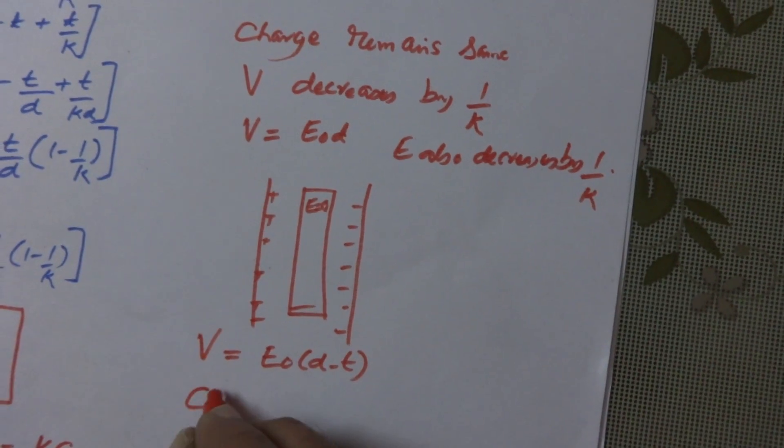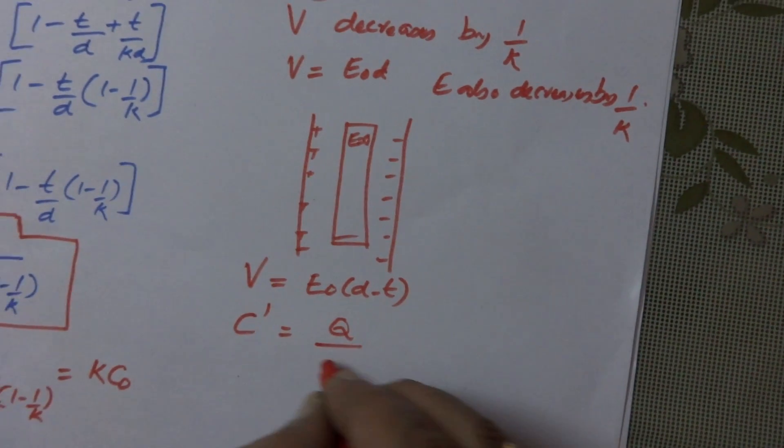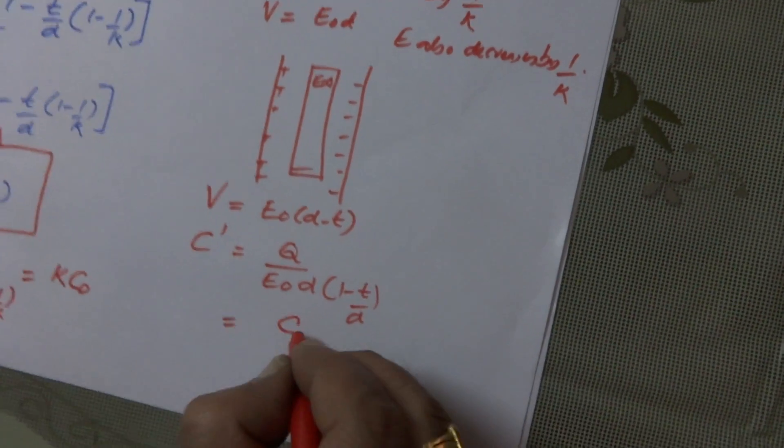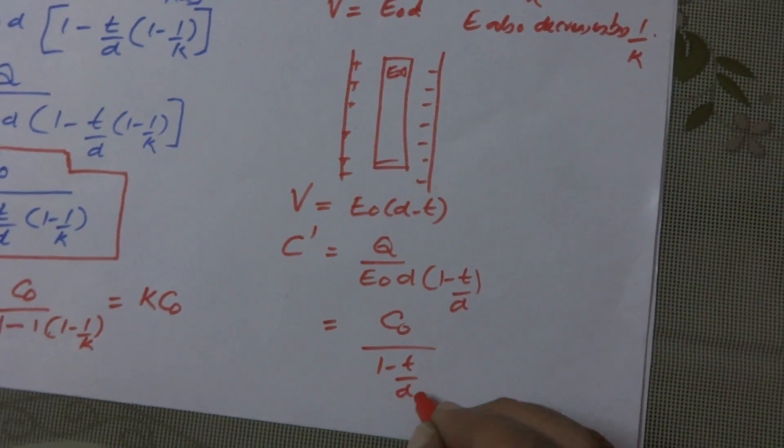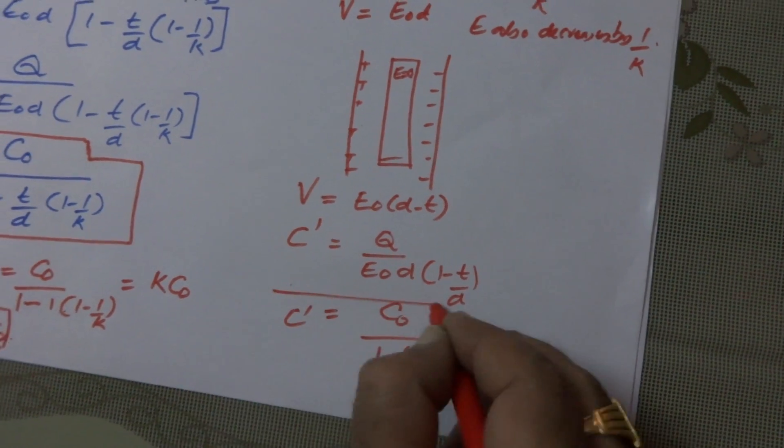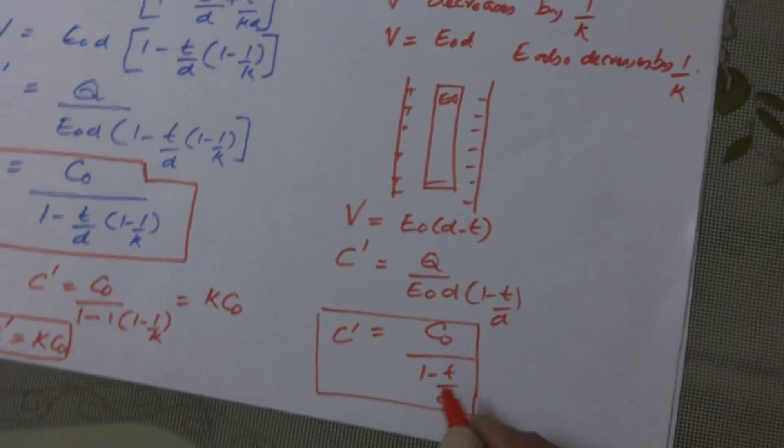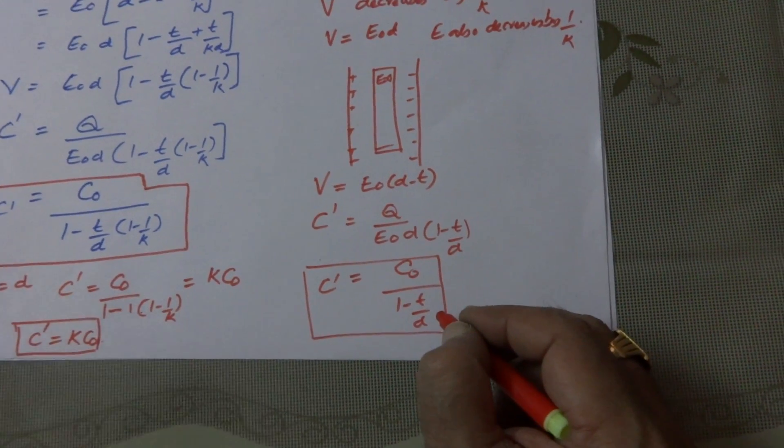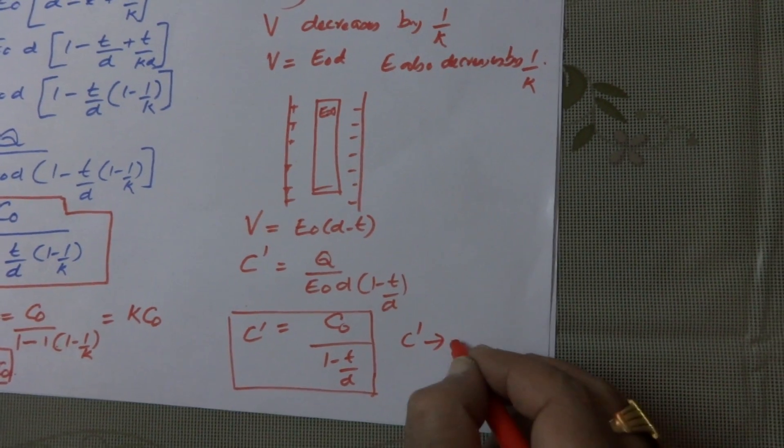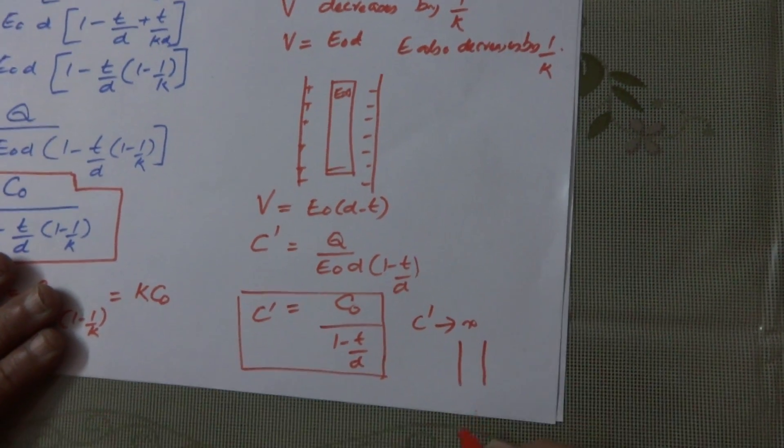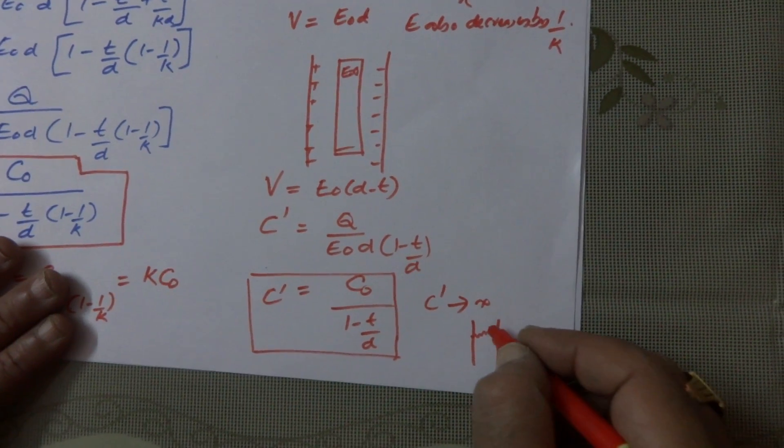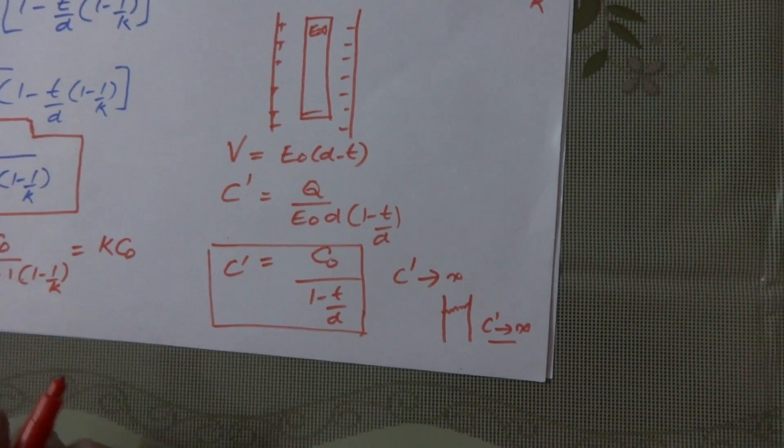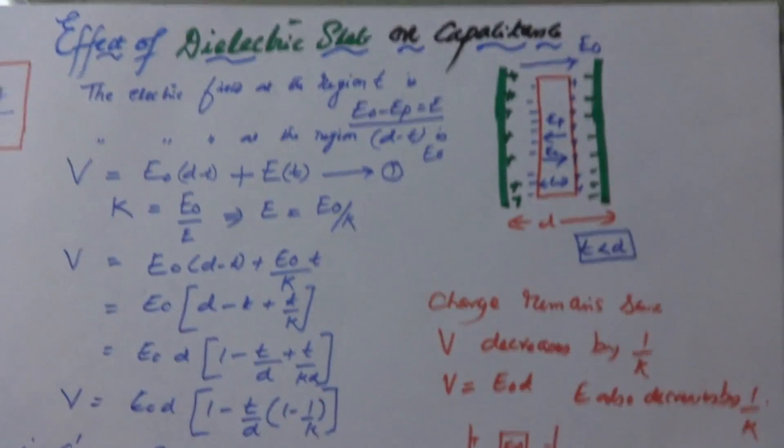This C dash is equal to q by E0 into d into 1 minus t by d. That means, it is C0 by 1 minus t by d. So this is the new capacitance when the metal slab of thickness t is introduced. Suppose, if this thickness is equal to the total thickness, the distance between the two plates, then what happens? C dash tends to infinity. That is, if you take any capacitor and even if it is joined with a wire, conducting wire, then its capacitance tends to infinity. So this is the concept of effect of dielectric slab and effect of metal slab.